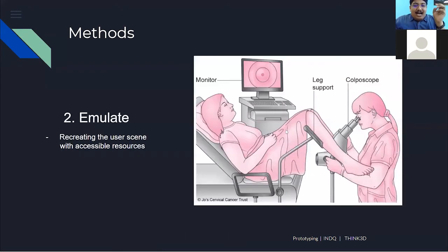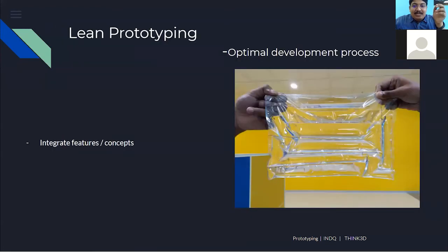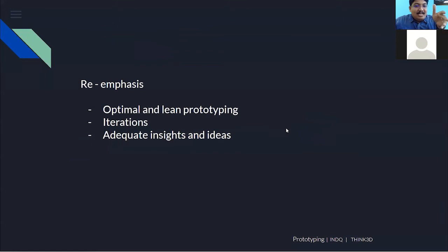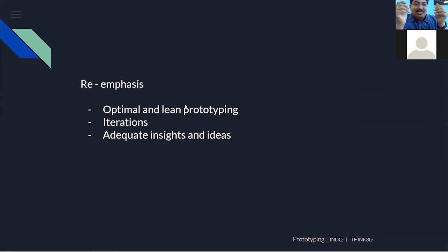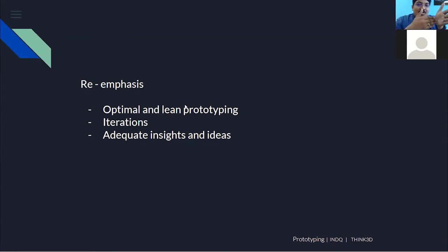To sum up, these three things are really important in this session: first, how effectively are we creating a prototype — the optimal, lean way of prototyping; second, better utilization of resources, don't waste; and third, lean prototyping iterations. The number of iterations depends on what you need to attain. However, even if you could achieve a product directly, take baby steps — focus on one feature at a time, because you see things better when focused on a particular feature.